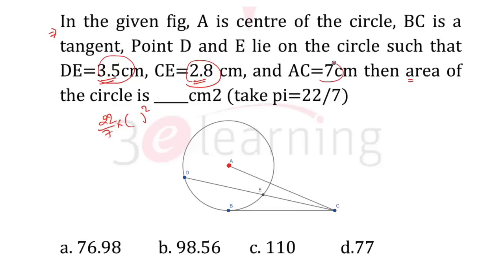If you analyze the question, the concept is quite easy. This is nothing but tangent and secant product. The formula is BC square equals CE into CD, tangential point to distance.